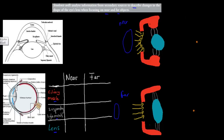The lens is the flexible part that focuses light onto the retina. Attached to the lens are the suspensory ligaments, which can flatten or round the lens depending on what's needed. The ciliary muscles control these ligaments — when the muscles contract, the ligaments are loose and the lens becomes round. When the muscles relax, the ligaments are tight and pull the lens flat.